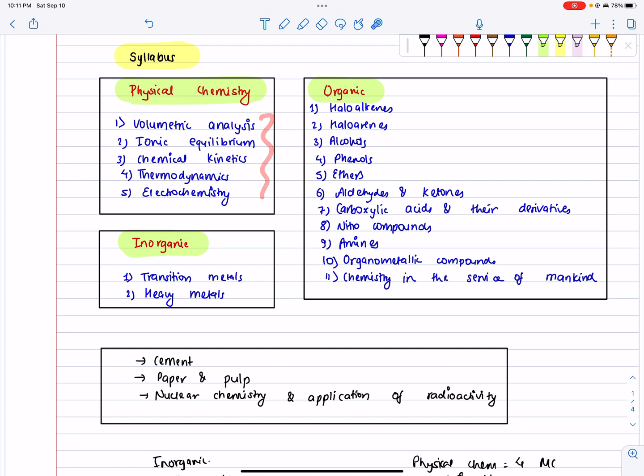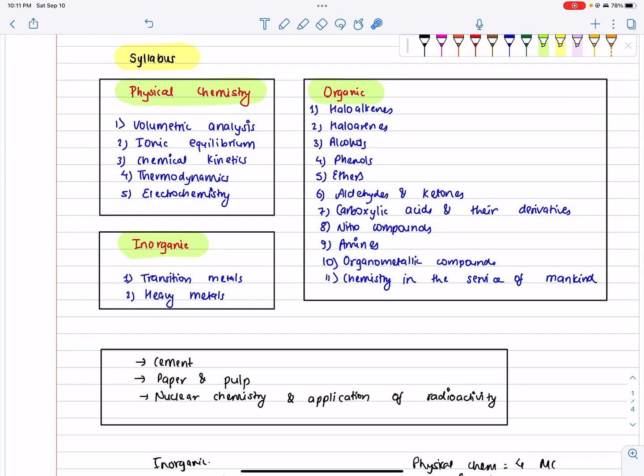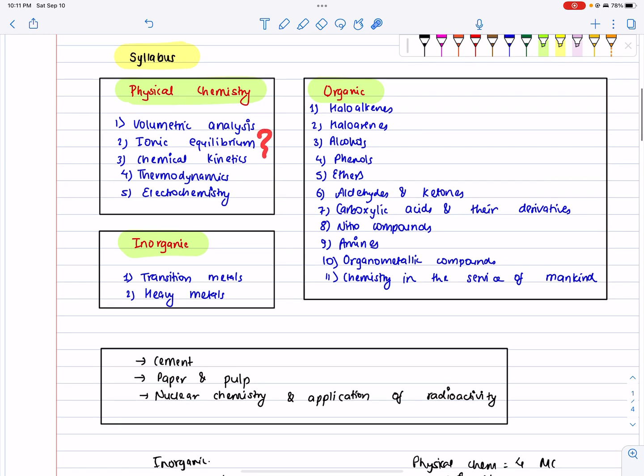We have to include volumetric analysis topics like normality and molarity. We have to include both theory and numerical problems. We have to include 3-4 numerical problems. Then we have to include chemical kinetics with the numerical method for zero order reactions.